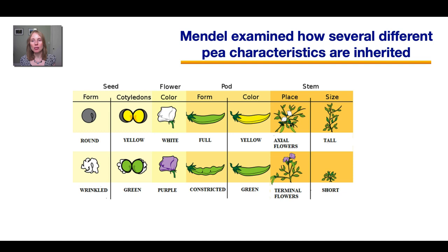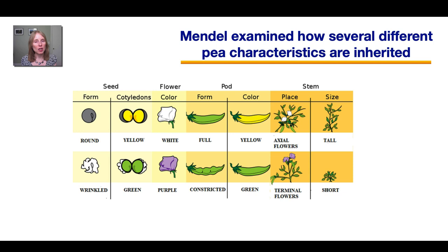This image illustrates the pea characteristics that Mendel examined. He looked at seed shapes such as round versus wrinkled, seed color — yellow versus green, flower color — white versus purple, pod shape, placement of the flowers, and height — tall versus short. Now, we know that in many organisms like humans, traits get a lot more complicated than just this either-or. Humans have a lot of intermediate heights. But in pea plants, certain characters are kind of straightforward, like tall versus short, while others are more complex.